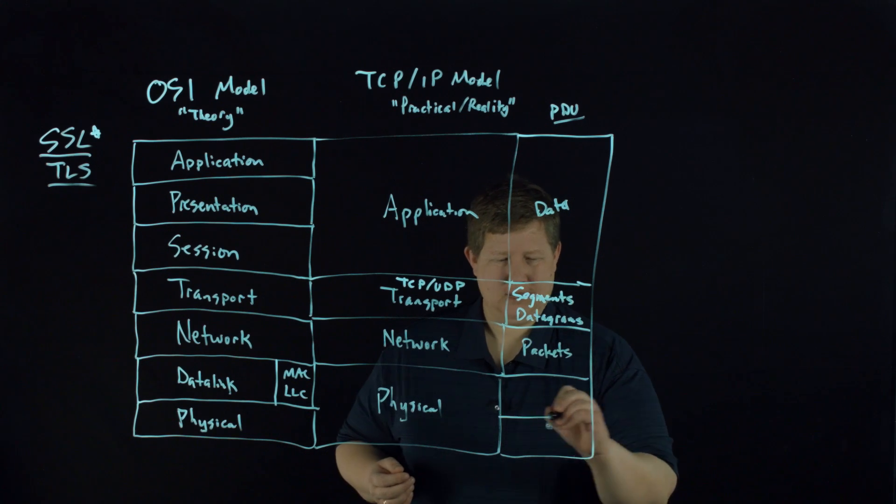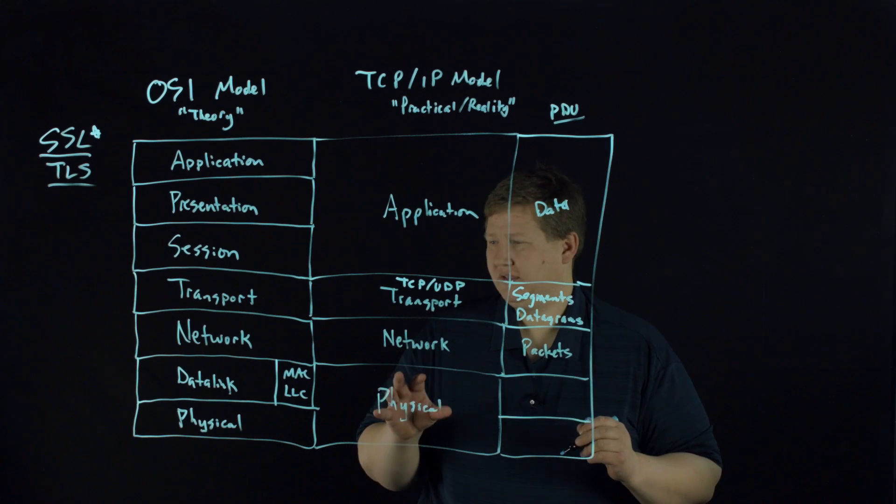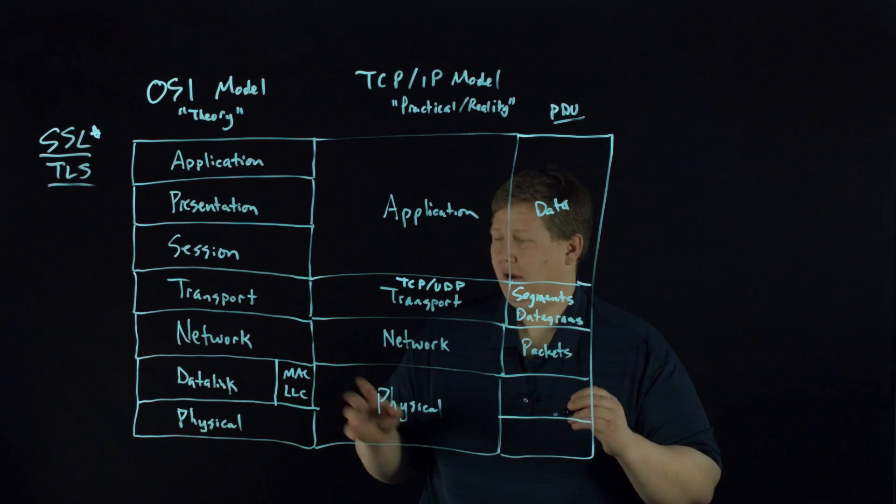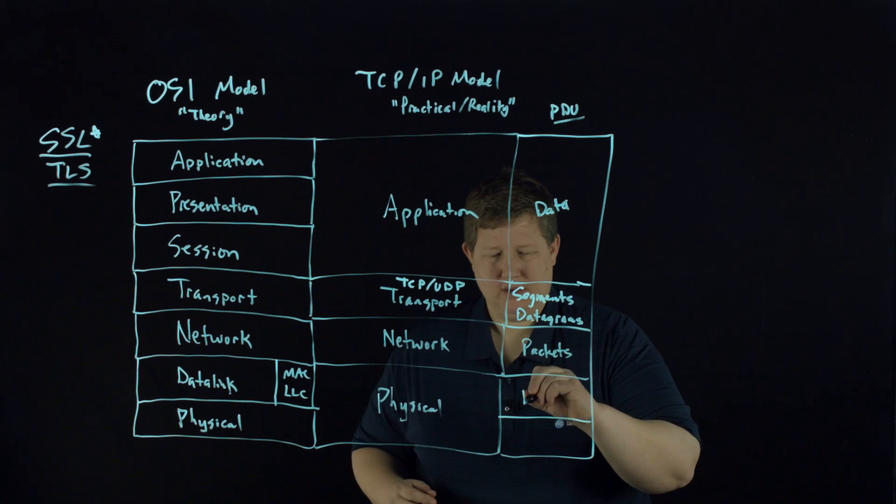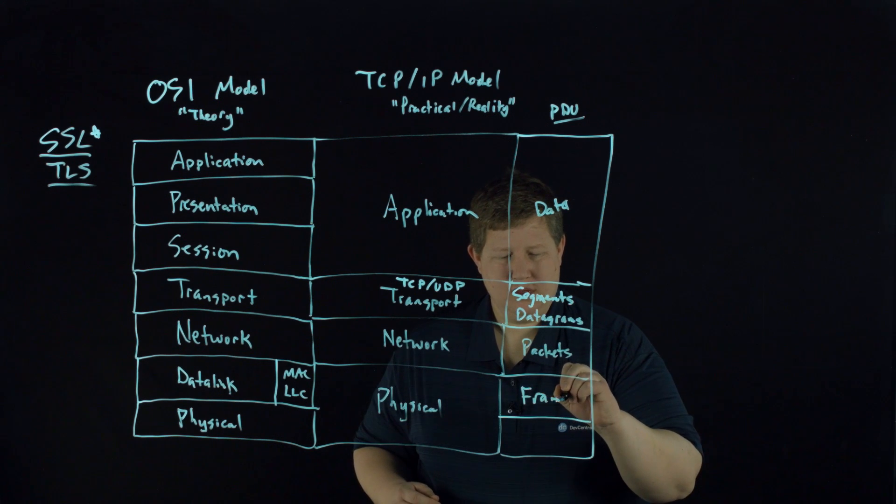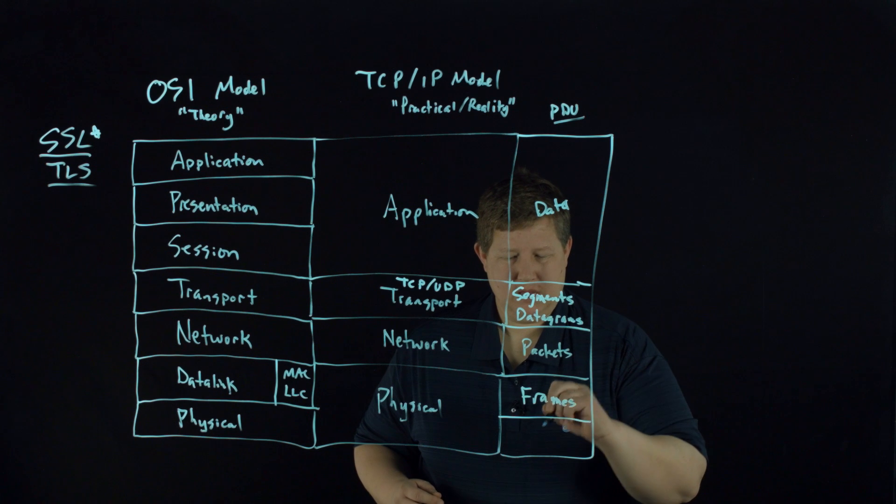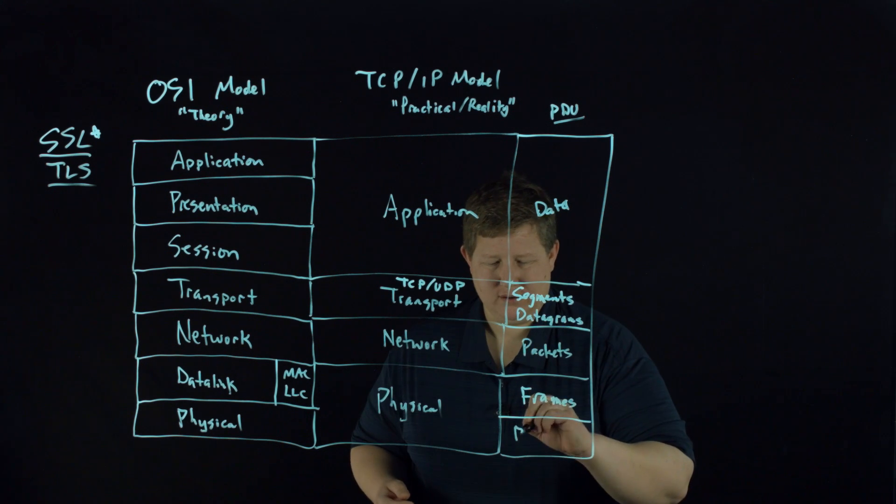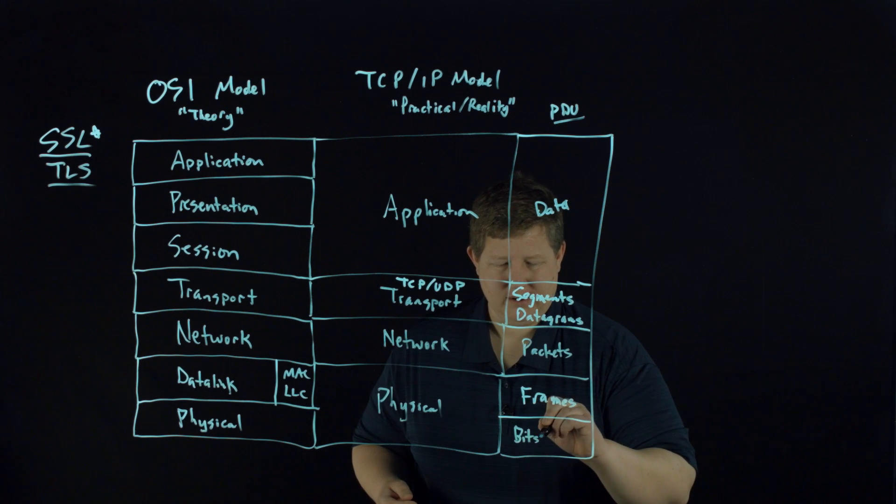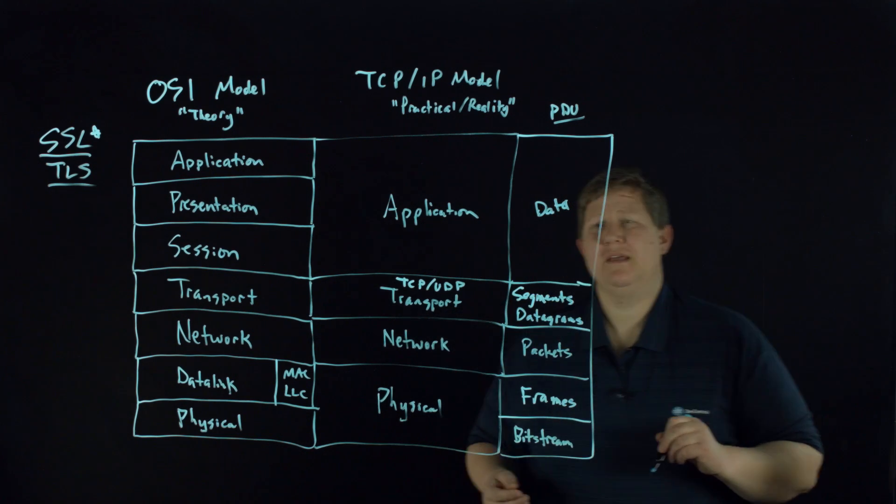For TCP/IP and OSI, at the physical layer, you have layer two, you have frames. And then at the physical layer, actually hitting on the wire, you have a bit stream.